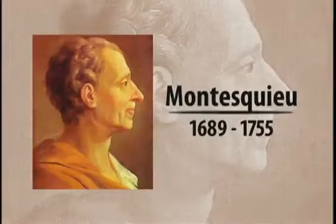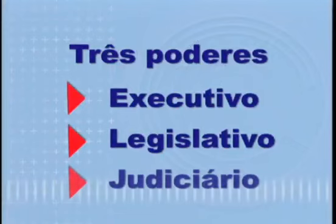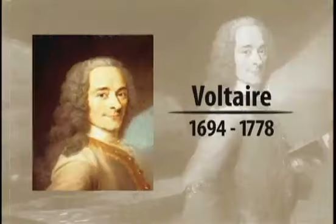Outro pensador interessante é Montesquieu, cujo nome oficial é Charles Secundá. Montesquieu tinha uma teoria bem simples: o Estado não poderia concentrar poderes nem estar nas mãos de uma única pessoa. O Estado deveria estar dividido em três poderes — o executivo, o legislativo e o judiciário. Montesquieu defende a ideia de que o poder não pode estar concentrado nas mãos do rei.